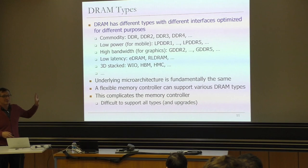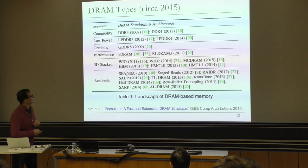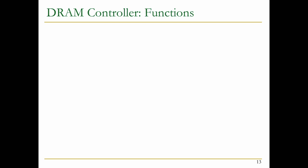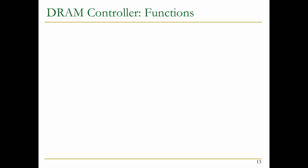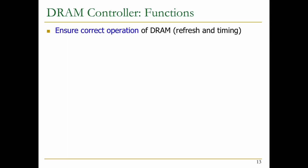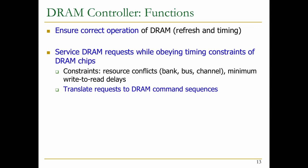So this is one complexity in the design of the memory controller — how do you support multiple different technologies? Let's take a look at the functions of the DRAM controller. The key first function is ensuring correct operation: refresh and timing. On top of this, you need to service DRAM requests while obeying timing constraints. There are many constraints: banks, buses, channels, resource conflicts. You need to keep track of minimum delays, write-to-read delays.